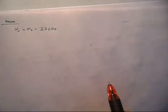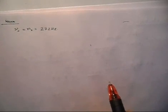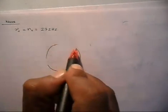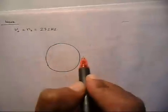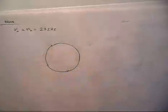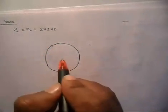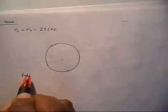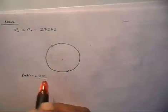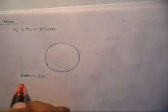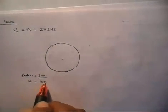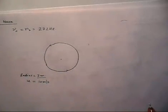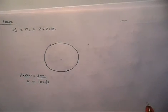The source is moving along a horizontal circle of radius 3 meter with a speed of 10 meter per second. So the source is moving in a horizontal circle. Let us say this is the horizontal circle in which the source is moving. The radius of this circle is 3 meter. The speed of the source is given as 10 meter per second. A stationary receiver lies in the same plane at a distance D equal to 5 meter from the center of the circle.